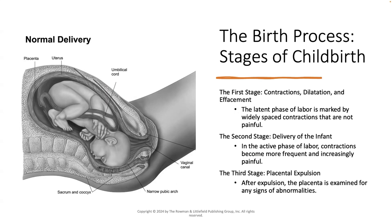The first stage is the latent phase of labor, marked by widely spaced contractions that are not very painful — like you can talk through them. They may not have an average time between them; they come and go. The second stage is the delivery of the infant — it's an active phase of labor where contractions become more frequent and increasingly painful, occurring roughly every two to five minutes.